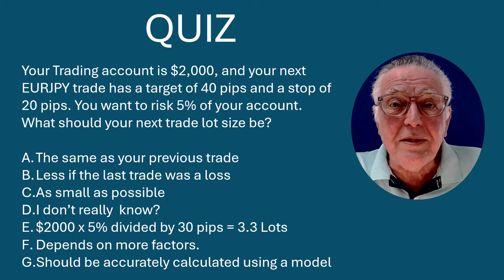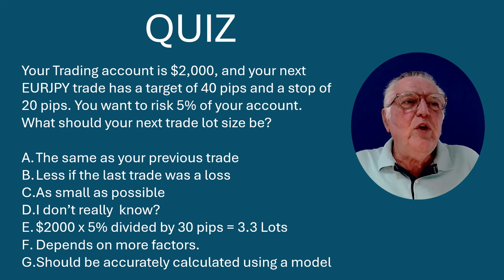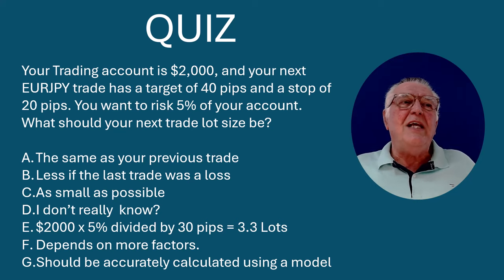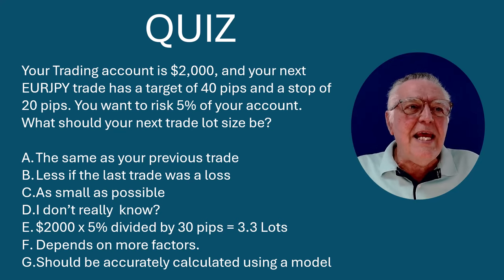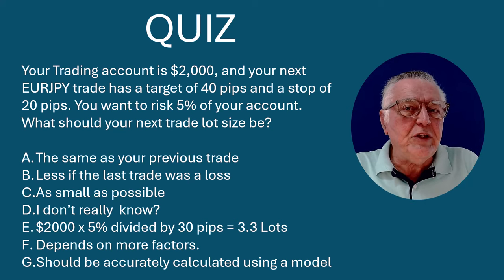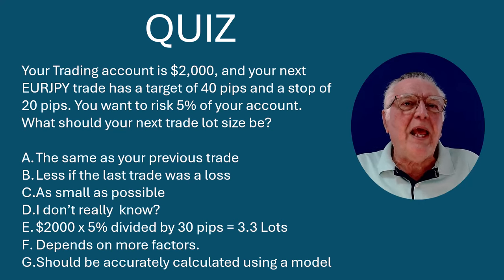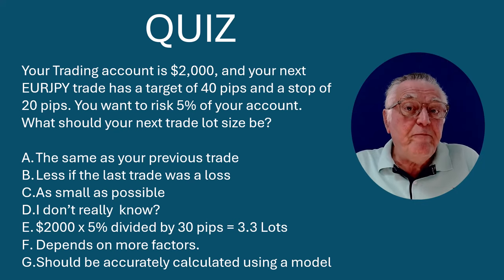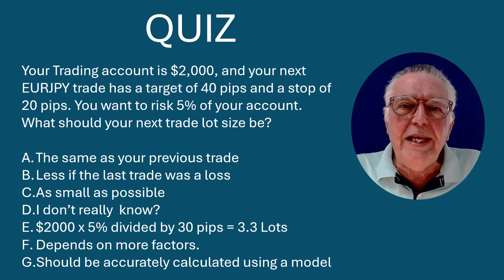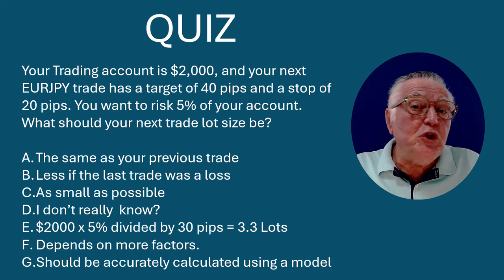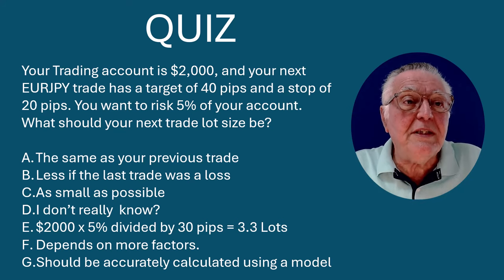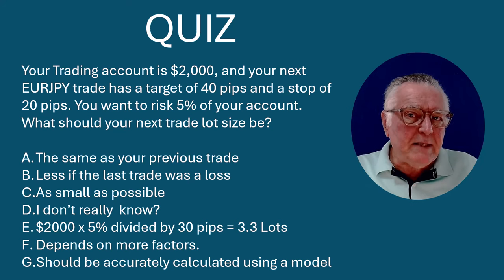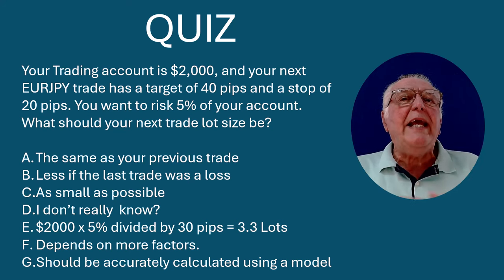I'm going to start the video with a quiz. You are trading a two thousand dollar account and you're trading the Euro Yen. You have a target for your next trade of 40 pips and you have a stop of 20 pips. You want to risk five percent of your account on the next trade. How big should your lot sizing or position sizing for that trade be?